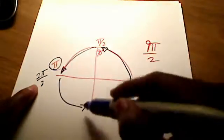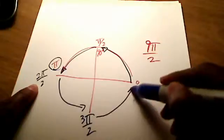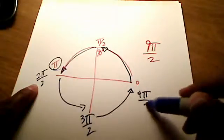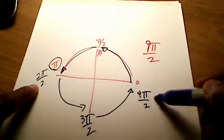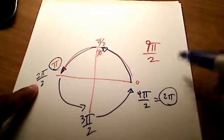If we go another 90 degrees, that lands us at 3π over 2. And if we go another 90 degrees, that gets us to 4π over 2. But you know that 4π over 2 simplifies down to just 2π, and 2π is just one full rotation. All right, well, let's keep going.